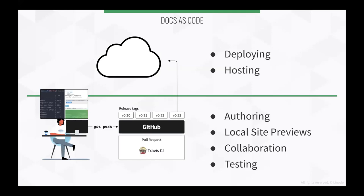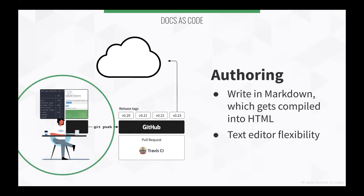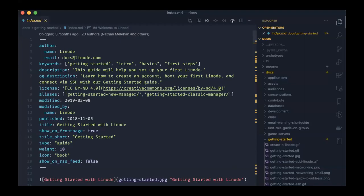The first part of the workflow is authoring. When writing in a docs as code methodology, you're writing in plain text — often in a dialect called Markdown. That looks like this in your text editor: you have plain text, and here's an example guide from our library. Each one of our guides has metadata at the top, and then down below it has the content of the guide written in Markdown.